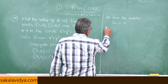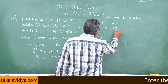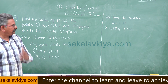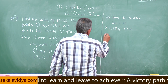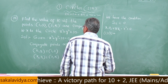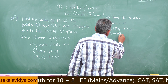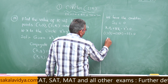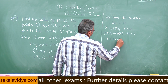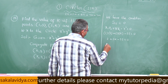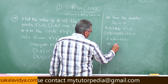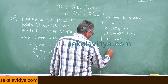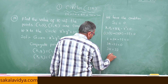That means x₁x₂ + y₁y₂ - r² = 0. Substituting: 1 × 2 + 3 × k - 35 = 0, which gives 2 + 3k - 35 = 0, then 3k - 33 = 0, so 3k = 33, therefore k = 11.